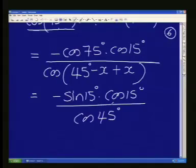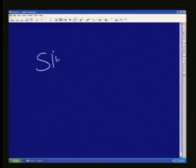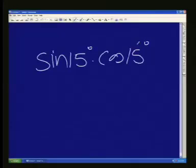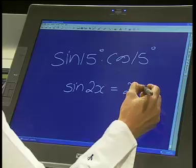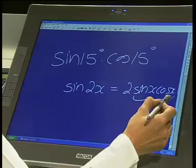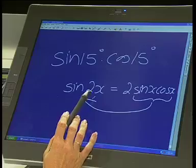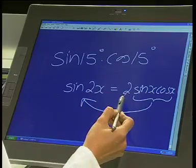And now we've got this product here of sine 15 times cos 15. What is the product of sine and cos as one trig ratio? Anyone know? Okay. If I give you the sine of twice x, that is simply twice of sine x times cos x.